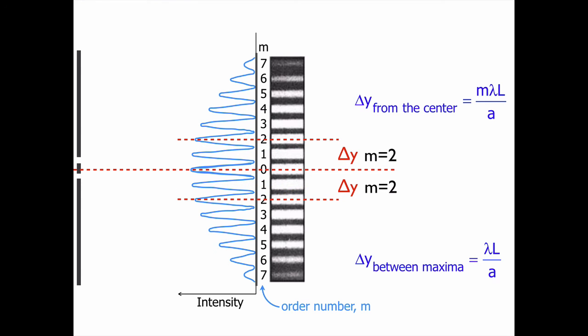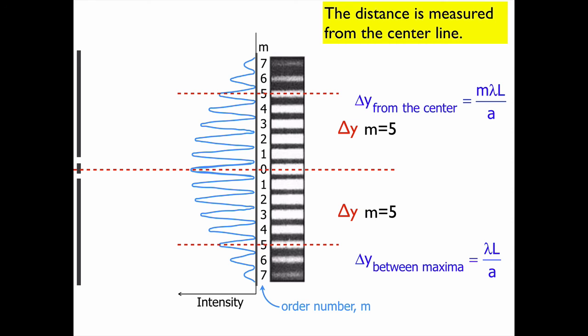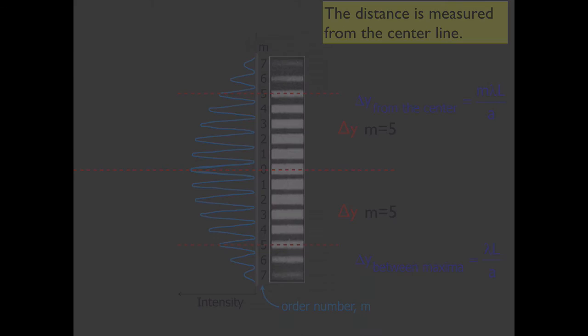Between the second fringe, 0 and the second fringe, it's mλL/a. And between the third, it's mλL/a, and that's equal to m equals 3, and then I can go up to m equals 4, and m equals 5. So the distance is always measured from the center line, and that's what that's trying to show.